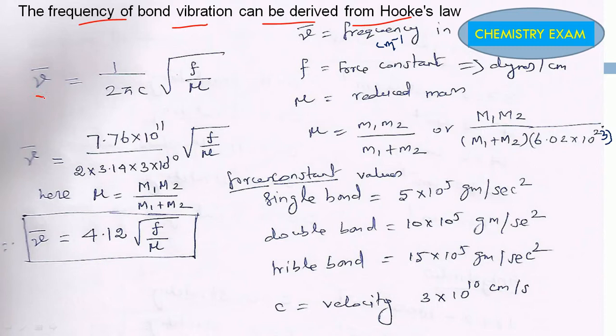Nu bar, the wave number, is equal to 1/(2πc) times the square root of F/μ. F is the force constant in dynes per centimeter. μ is the reduced mass, which equals M1M2/(M1+M2) or M1M2/((M1+M2)×Avogadro number). Nu bar is the frequency in centimeter inverse, and c is the velocity, 3×10^10 centimeters per second.